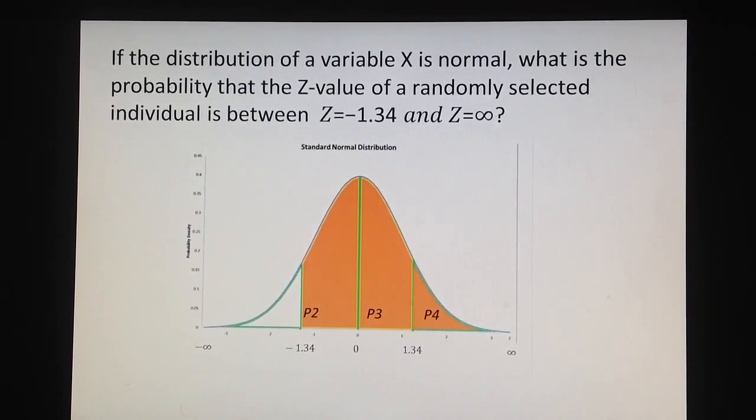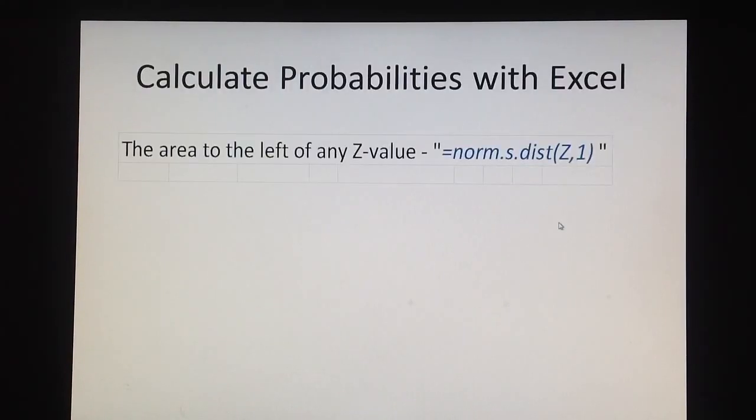We will calculate more complicated probability. For example, probability that a randomly selected individual will have z-score between negative 1.34 and infinity, and this probability is measured with the area P2, P3 and P4. I will use Excel and a simple function called equal normal standard distribution, abbreviated as norm.s.dist, and then in parenthesis, the z-score comma 1. Very simple function.